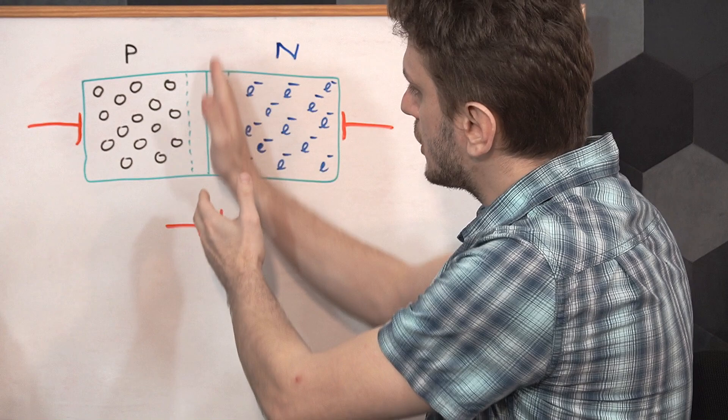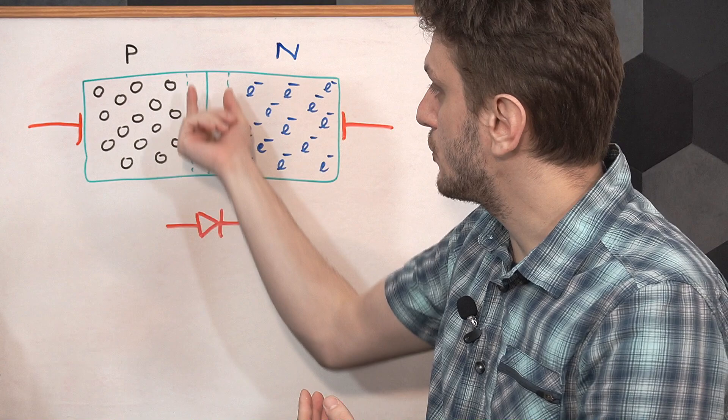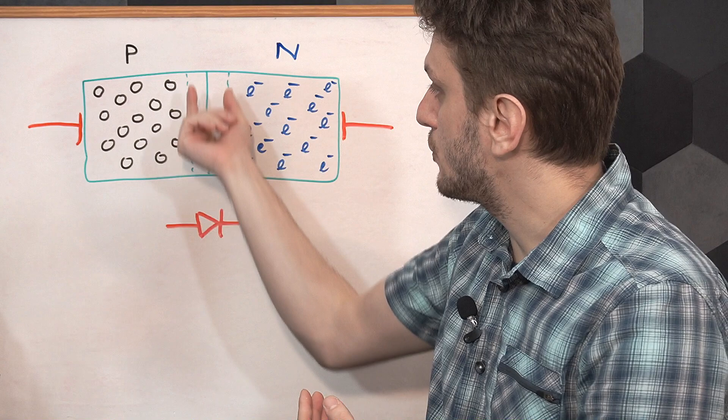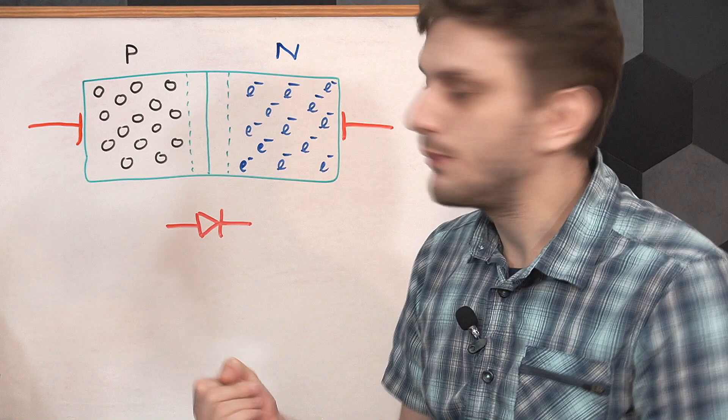So right in the junction between the two areas, the holes from the P region and the electrons from the N region recombine, cancelling each other out, so you're left with a so-called depletion area, where you don't have any charge carriers. So this area in the middle is electrically isolating.